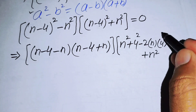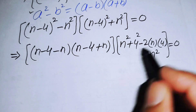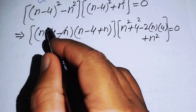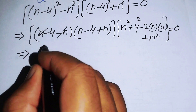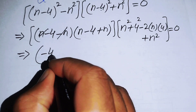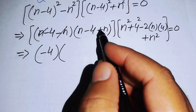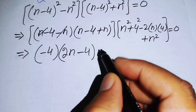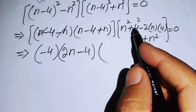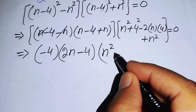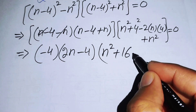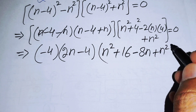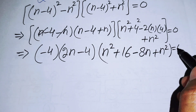The n terms cancel in the first factor, giving minus 4. Adding the two n² terms in the second factor gives 2n² minus 8n plus 16. So we get: (minus 4)(2n minus 4) times (2n² minus 8n plus 16) equals 0.